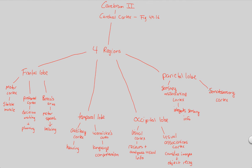The parietal lobe also contains the somatosensory cortex. This part of the parietal lobe interprets sensory information coming specifically from the skin and gives you an overall awareness of where your body is. So the somatosensory cortex interprets sensory information and helps you understand your body's position and awareness. There are lots of functions in this very important part of the brain.